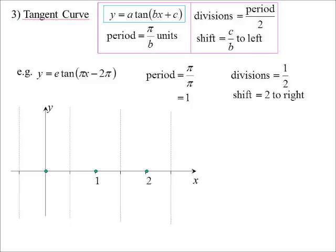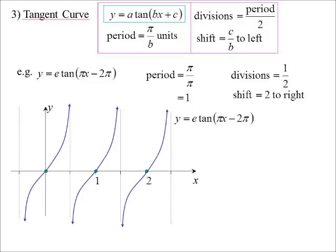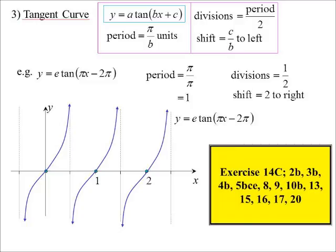And now we draw in our tan curve. Now, the e is going to make it steeper. But as I don't have a scale on the y-axis, it doesn't really matter. I can draw any tan curve I like. Because there's no scale there. There's the basic branch. Remember, when you come through, it's at 45 degrees of the tan curve. It's not a cubic. Complete that. So, there's e tan(πx - 2π) for you to see.